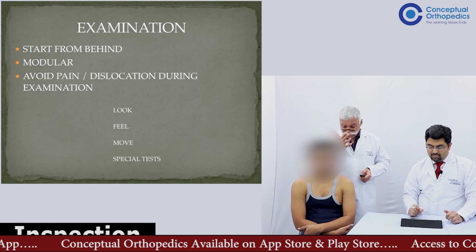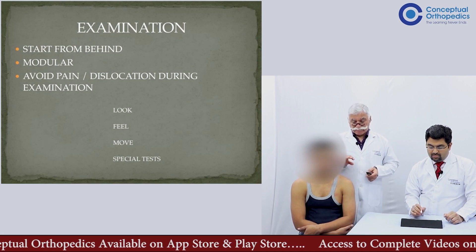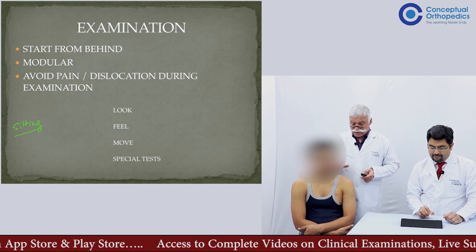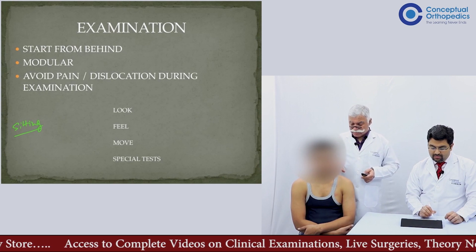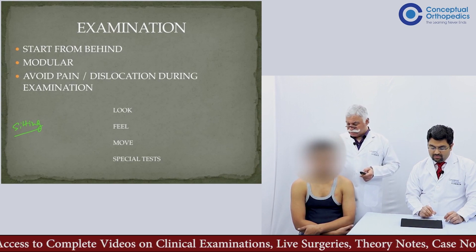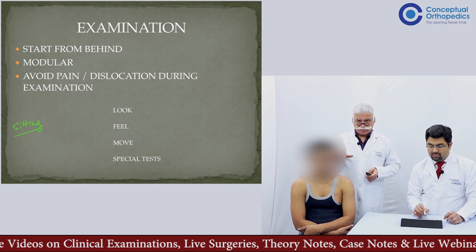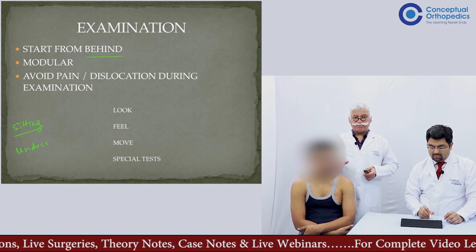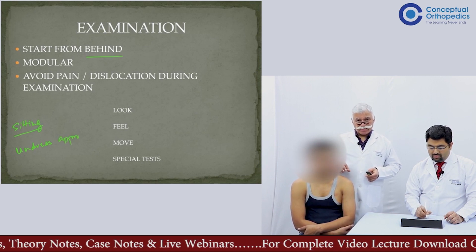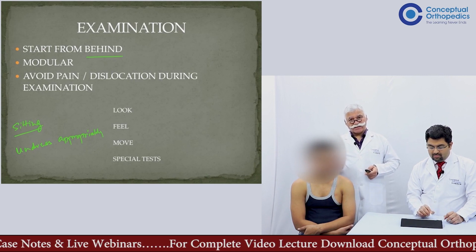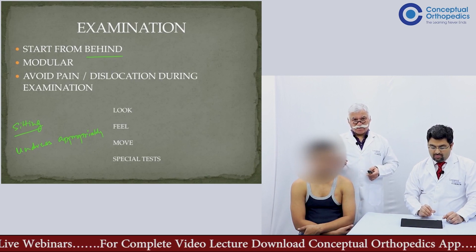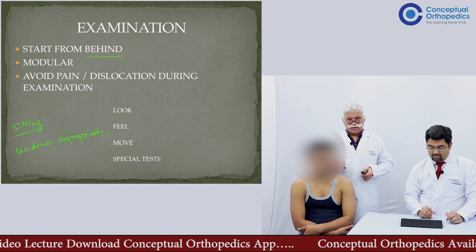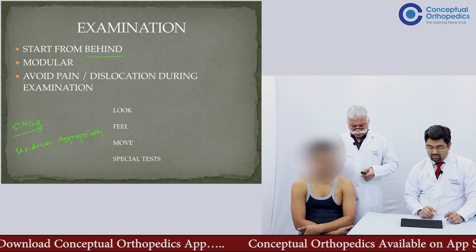Coming to the examination, most things are examined when the patient is sitting, with certain tests done when the patient is lying down. One usually starts from behind. It is important to disrobe the patient to be able to see the arm properly — the upper part of the body should be exposed. One must remember that some patients may have had recent painful episodes and one must try to avoid pain. As in all orthopedic examination, one proceeds with the standard format of look, feel, move, then special tests — the same protocol is followed in shoulder examination.